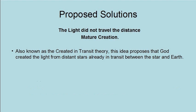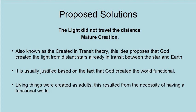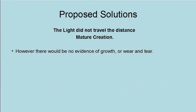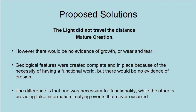Mature creation, also known as the created-in-transit theory, proposes that God created the light from distant stars already in transit between the star and the earth. It is usually justified based on the fact that God created the world functional. Living things were created as adults, and geological features were created complete and in place, because of the necessity of having a functional world. However, there would be no evidence of growth or wear and tear. The difference is that functional creation was necessary, while created-in-transit light is providing false information, implying events that never happened.